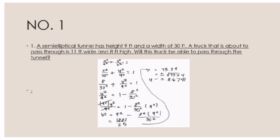Substituting the value again, it will become 8 squared over 30 squared plus y squared over 9 squared equals 1. Moving the value of 8 squared over 30 squared to the right side, it will become y squared over 9 squared equals 1 minus 8 squared over 30 squared.